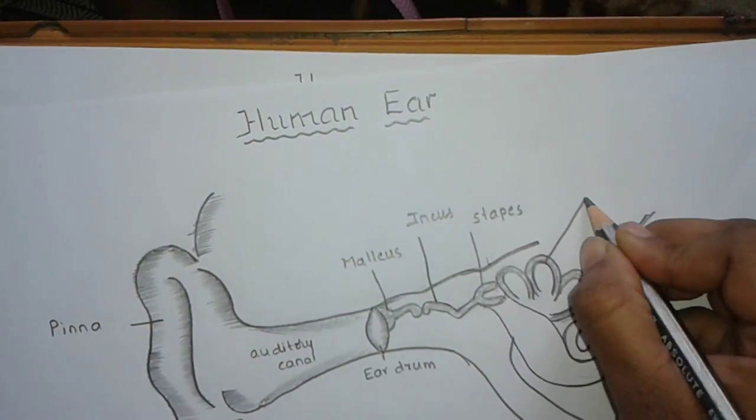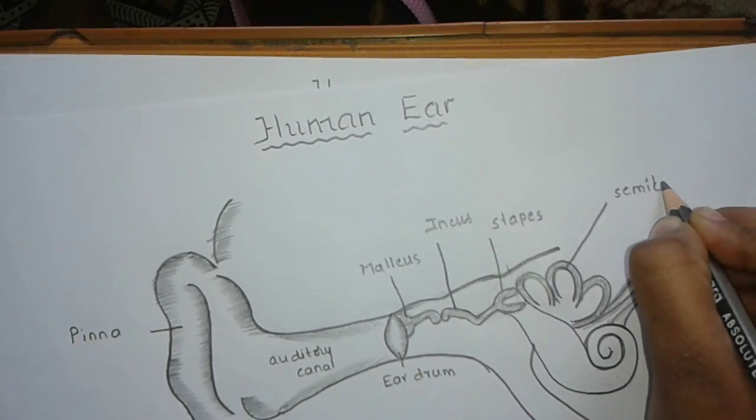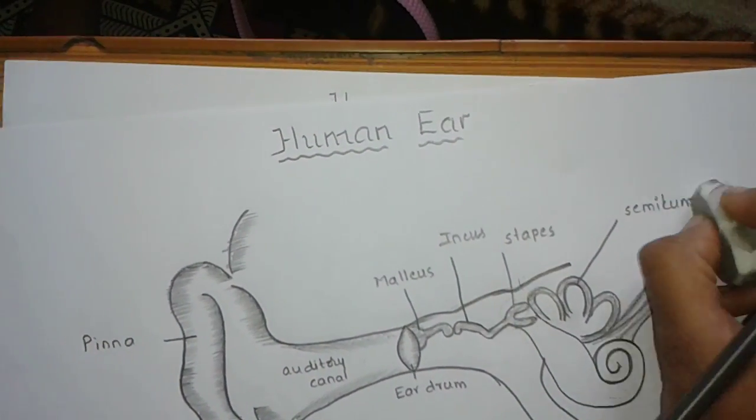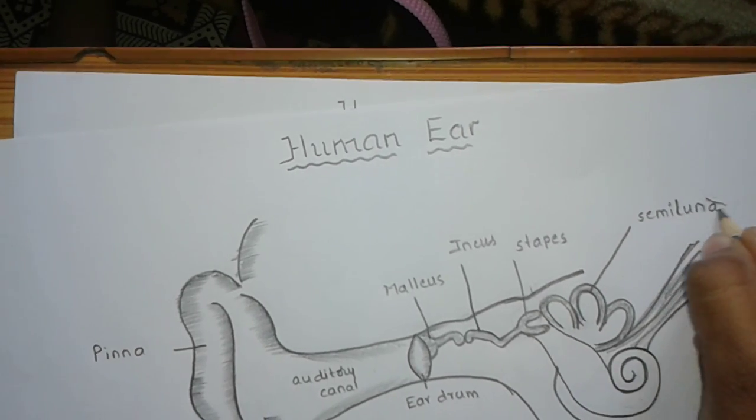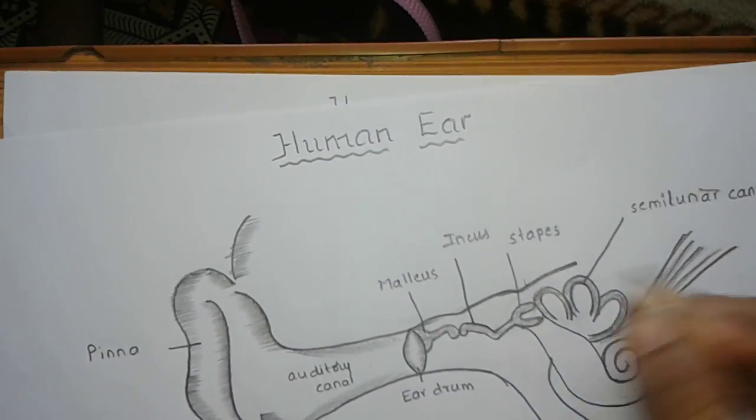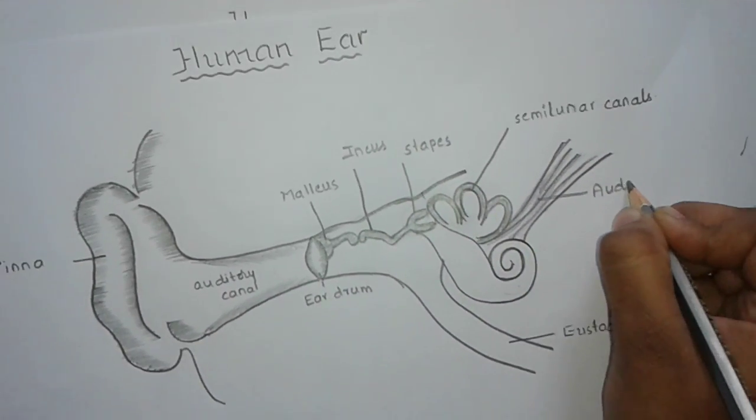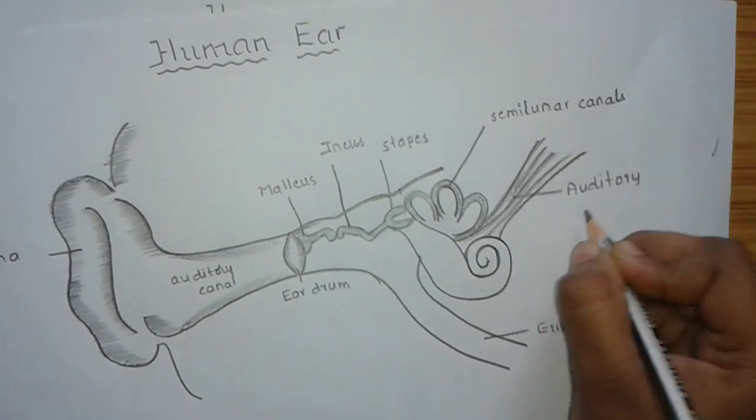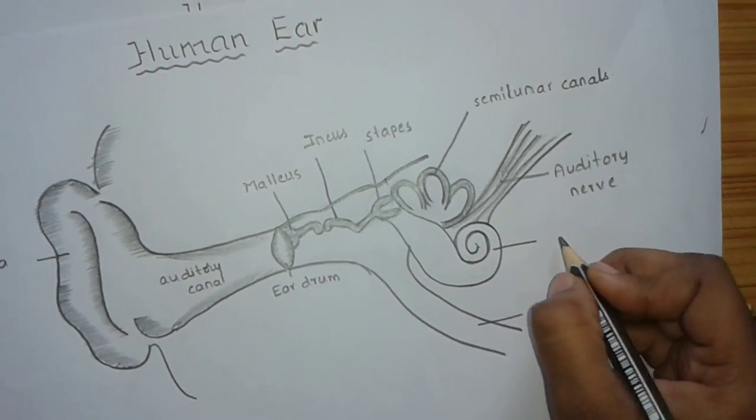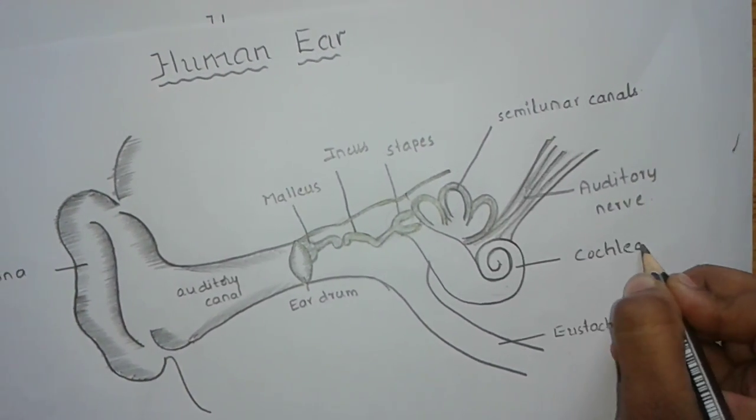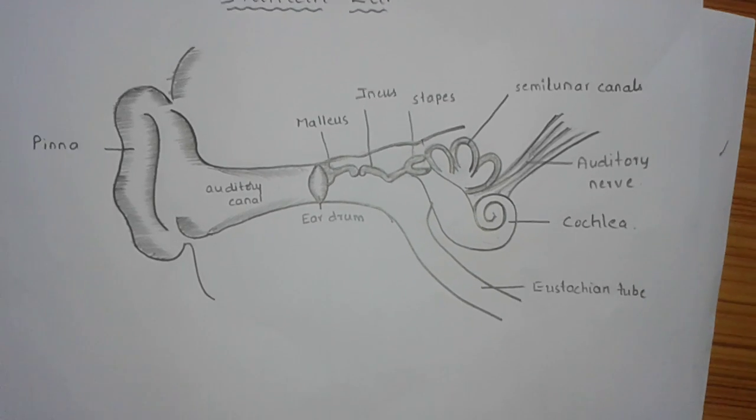And the three semicircular canals. Then this is the auditory nerve. And this is the lower part of the inner ear, that is the cochlea. So this is your human ear which will be asked for a four mark question.